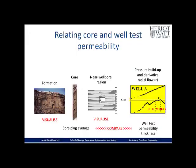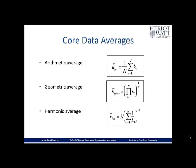The core plug averages can then be compared with the well test permeabilities, and this gives us the opportunity to visualize what is in the near-well region and perhaps to visualize what the formation consists of. The textbooks show us that there are three ways of averaging core data: the arithmetic average, the geometric average, and the harmonic average, with formulas given here.